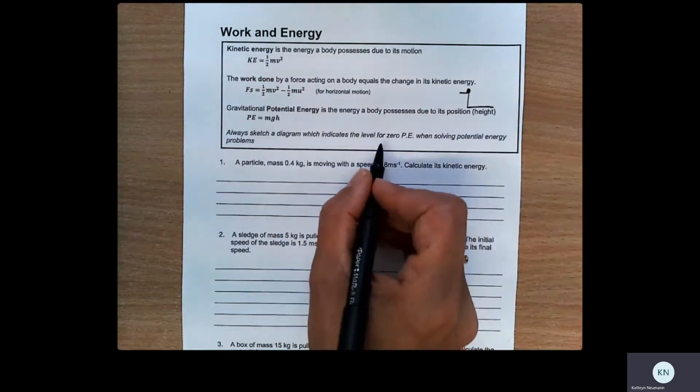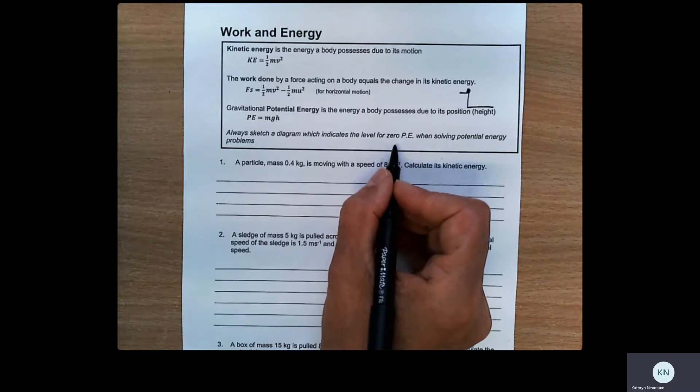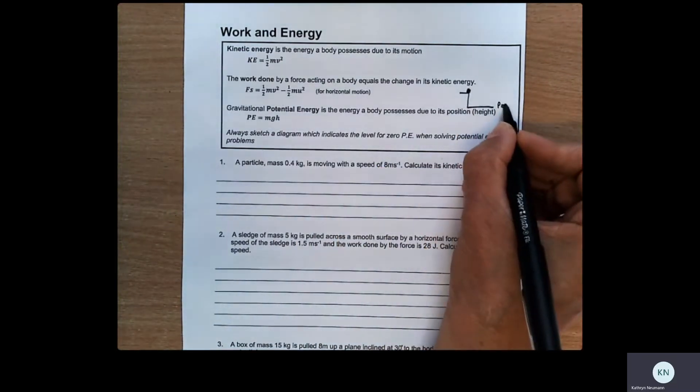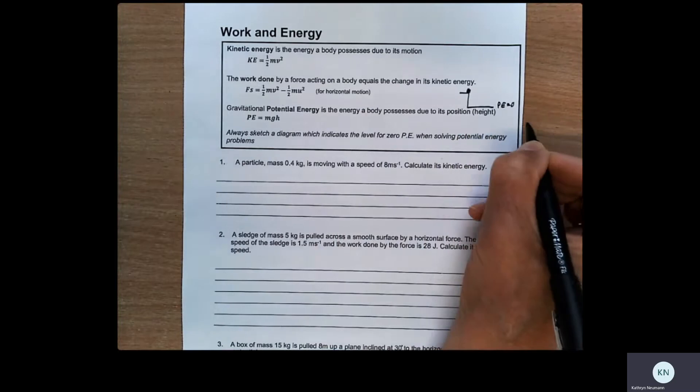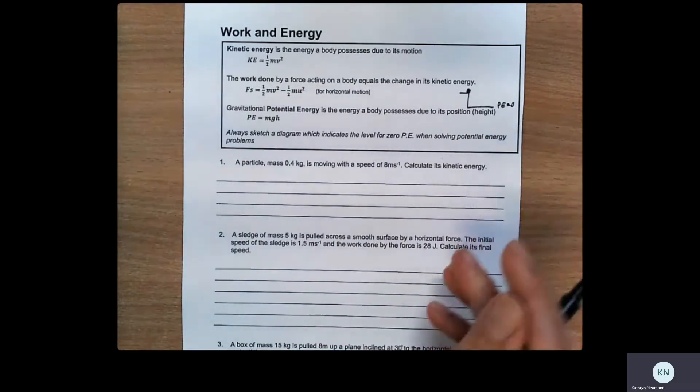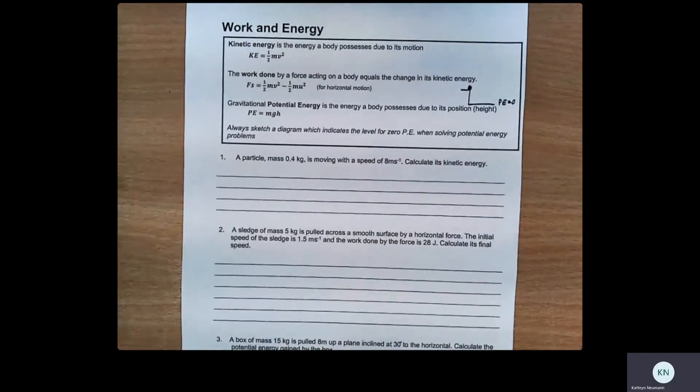It's always important to set the zero level for potential energy, because obviously in this example here, we would think of the floor as being PE equals zero. But in other situations, you might choose a different point. So you need to consider that. So let's have a look at some questions.